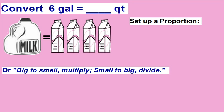To convert, you have several options. If you wanted to convert 6 gallons to quarts, you could set up a proportion. Gallons to quarts: we know there's 1 gallon, it's equivalent to 4 quarts. We know we have 6 gallons, and we're trying to figure out how many quarts.